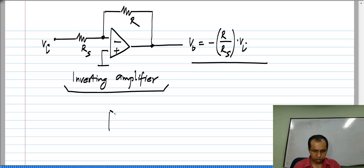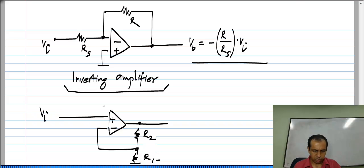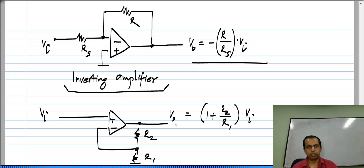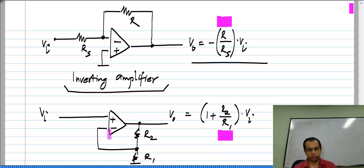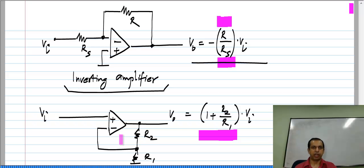You can contrast this to the non-inverting amplifier. If I call the resistors R_1 and R_2, and the input V_i, the output V_naught will be (1 plus R_2 divided by R_1) times V_i. In both cases the gain depends on the ratio of resistors — it does not depend on the op amp. If the op amp is ideal, the gain will be exactly (1 plus R_2 by R_1) for the non-inverting amplifier and minus R by R_s for the inverting amplifier. If the gain of the op amp is finite, we have analyzed it for the non-inverting amplifier; you can repeat that for the inverting amplifier. If the gain of the op amp is very large, the difference will be very small.